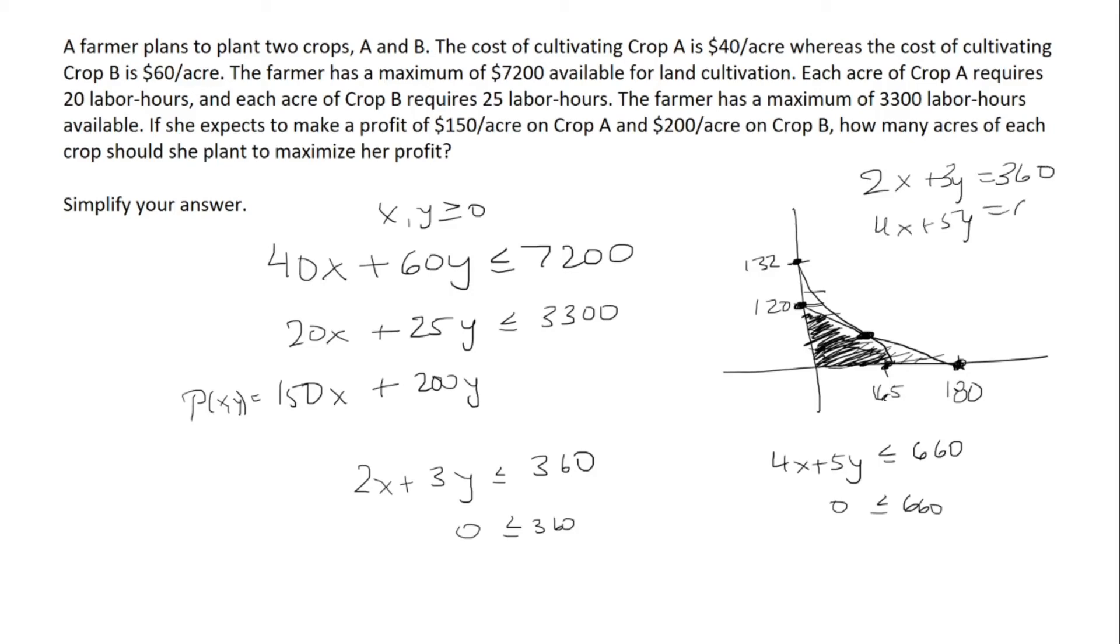If I multiply the top equation by 2, I get 4x, and then subtracting the bottom, 4x minus 4x is 0. 2 times 3y is 6y minus 5y is just y. 2 times 360 is 720 minus 660 is 60, so this is going to have a y-coordinate of 60.